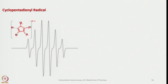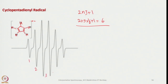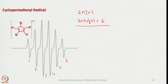Now let us look at the cyclopentadienyl anion radical. It is coupled with 5 equivalent hydrogen atoms, so applying the 2Ni+1 rule gives 6 lines.